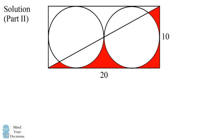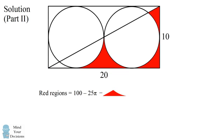Now let's tackle the second part of the problem. We know the area of the red regions as illustrated is 100 minus 25 pi. The second part asks what would happen if you remove the region from the lower left-hand corner. So we can solve for the red regions by solving for the area of this particular piece.